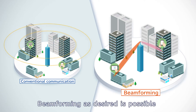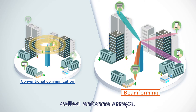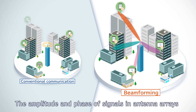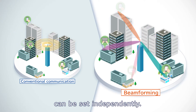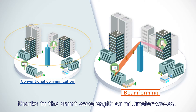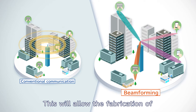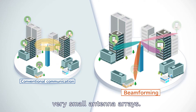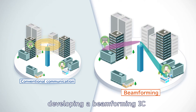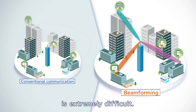Beamforming as desired is possible by controlling multiple antenna elements called antenna arrays. The amplitude and phase of signals in antenna arrays can be set independently. The size of individual antennas can be reduced, thanks to the short wavelength of millimeter waves, which will allow the fabrication of very small antenna arrays. On the other hand, developing a beamforming IC that controls many antenna elements is extremely difficult.